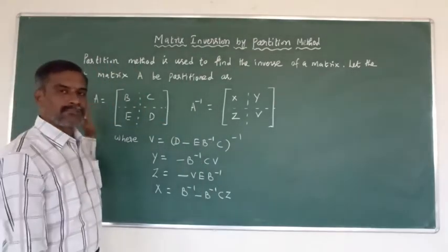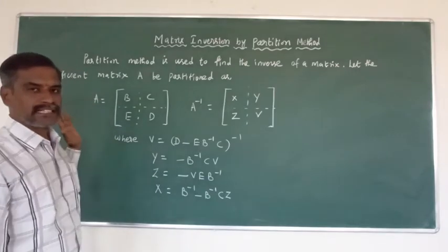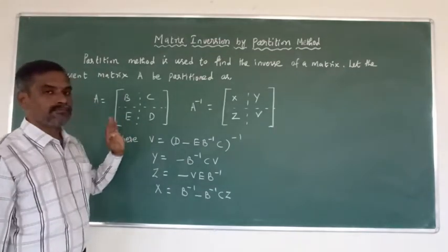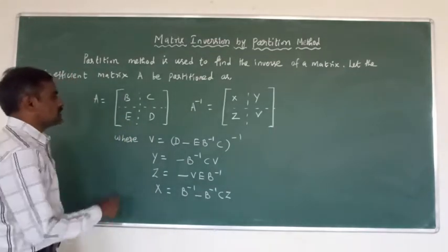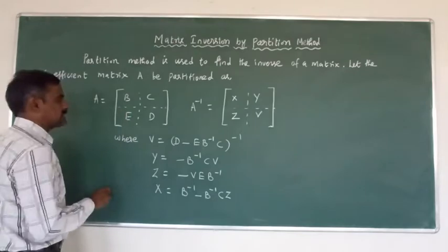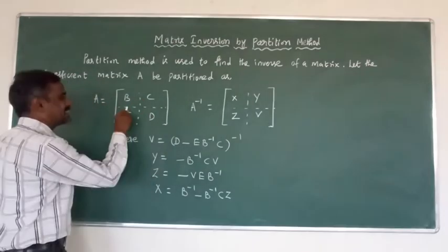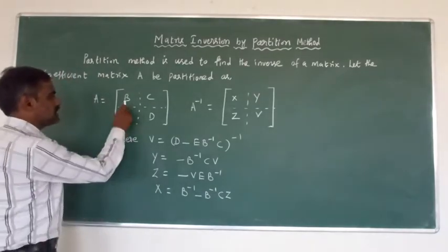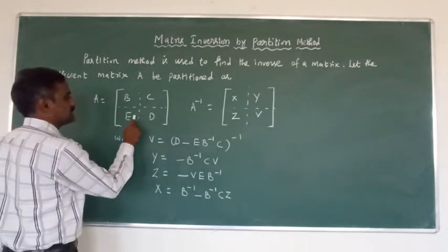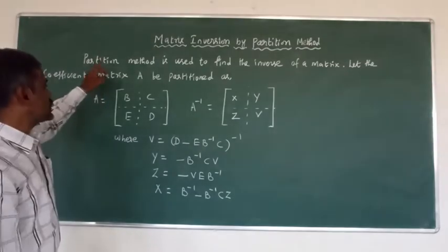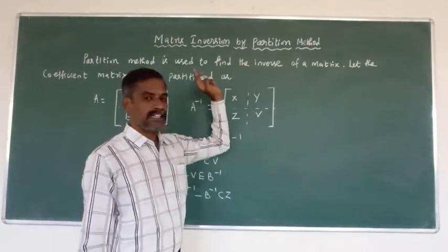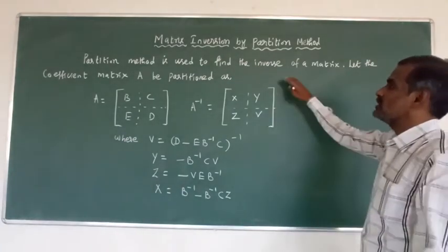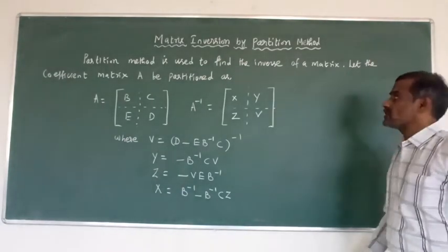Here, the partition method means the given A matrix — suppose A matrix is a 3×3 matrix. That 3×3 matrix we can partition like this into parts B, C, D, and E. The partition method is used to find the inverse of a matrix.